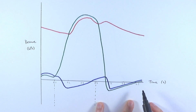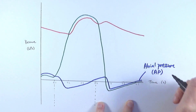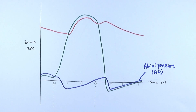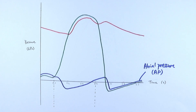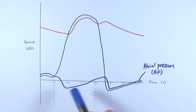First, let's look at the line on the bottom in blue — that is the atrial pressure, which I'll simplify as AP. As the name implies, it refers to the blood pressure inside the atria. We'll consider both the left and right atria together, because the heart contracts both atria together and both ventricles together — they don't operate in two separate sets.